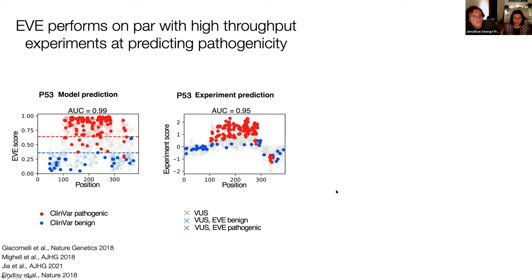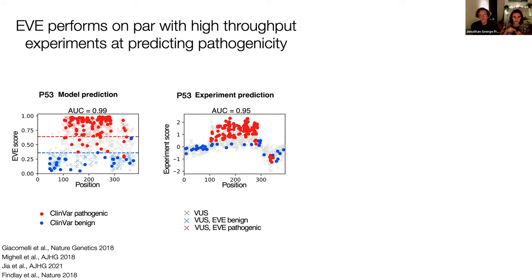So, so far we were talking about using deep mutational scans almost like a ground truth that we compare against to see how well we perform at predicting the results from deep mutational scans. But these deep mutational scans are also developed to predict the clinical effects. So a different question that we can ask is, how does our performance at predicting the clinical effects in humans compared to the performance of deep mutational scans at predicting the clinical effects of mutation in humans?